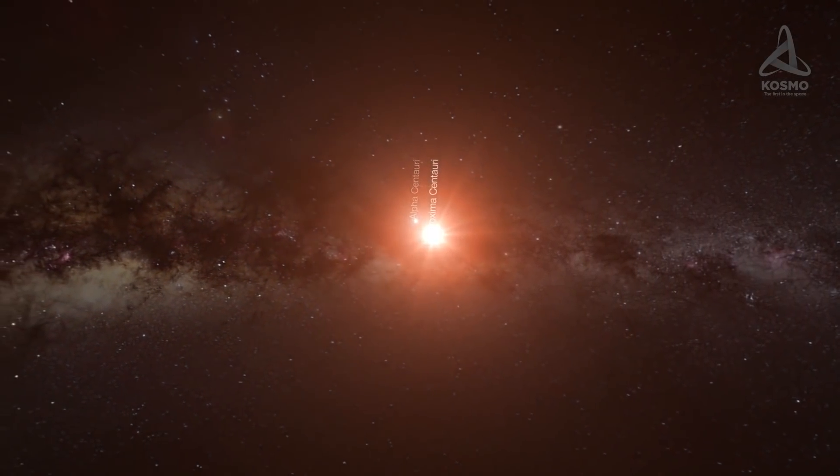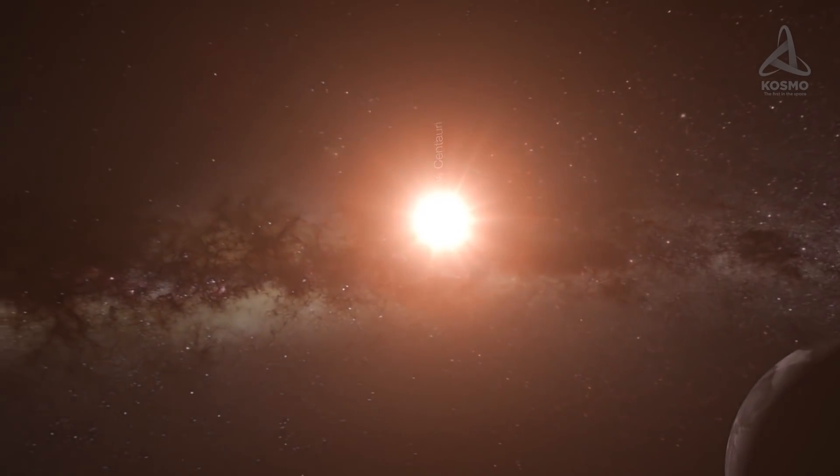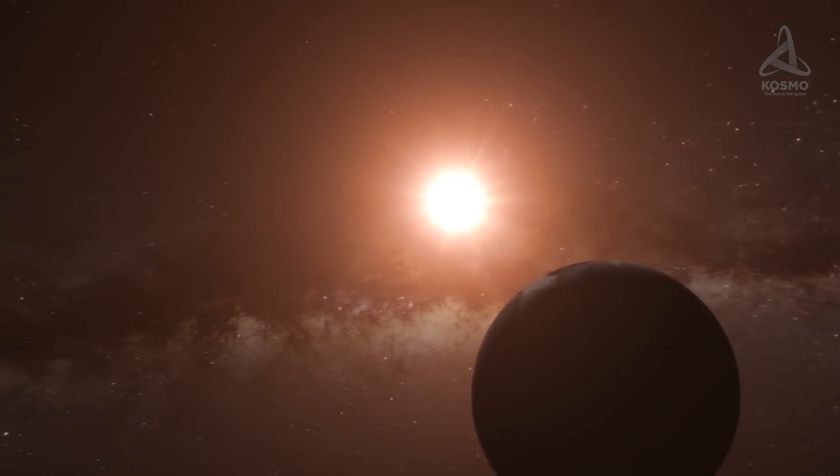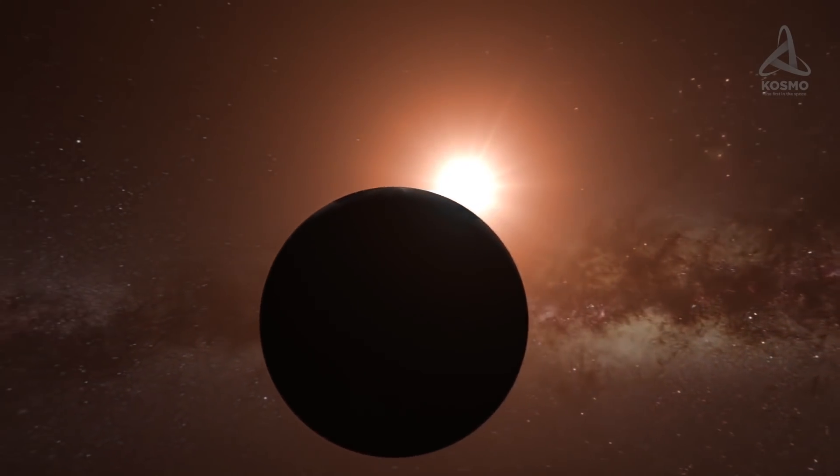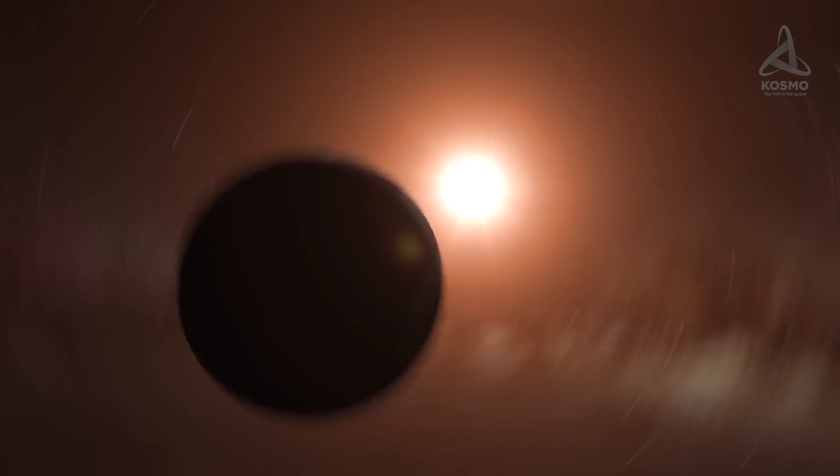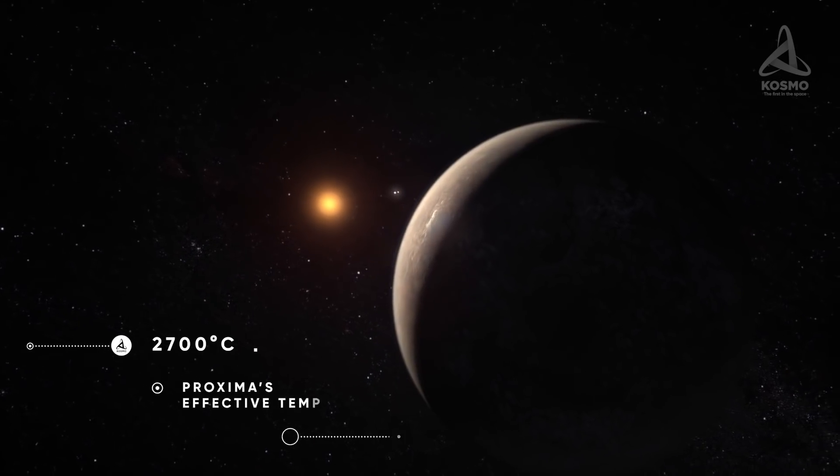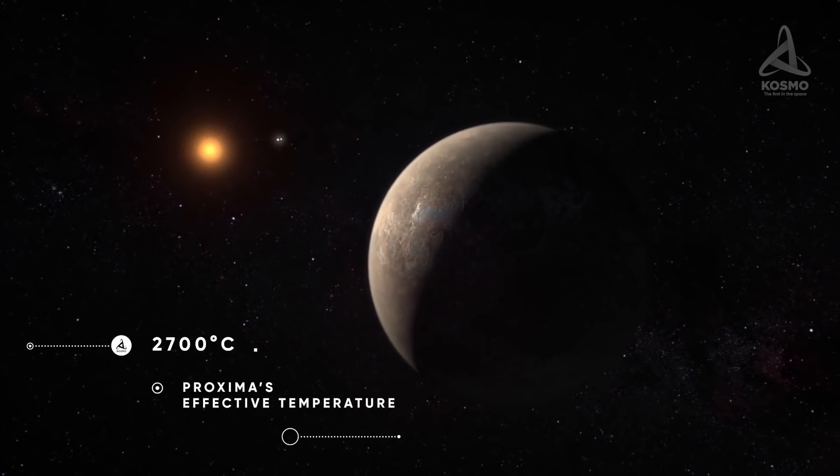Besides, it's the brightest stellar system in the sky. Both stars in the system resemble the Sun much more than Proxima itself. Proxima's color is completely different from that of the Sun because this star is much colder, 2700 degrees Celsius, as opposed to 5500 degrees on the Sun.